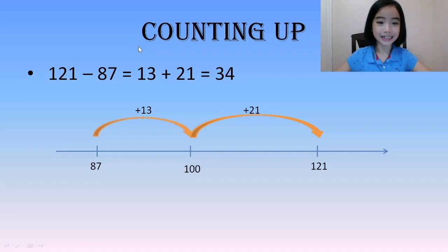The second strategy is counting up. For example, 121 minus 87. To find the difference between 121 and 87, we need to figure out how much bigger 121 is than 87. So, starting from 87, we do counting up. From 87 to 100 is 13. And from 100 to 121 is 21.